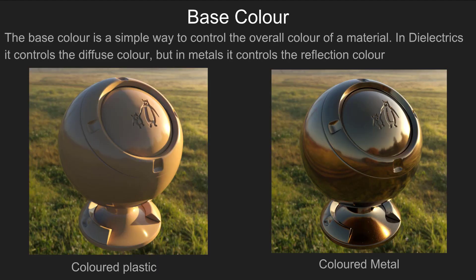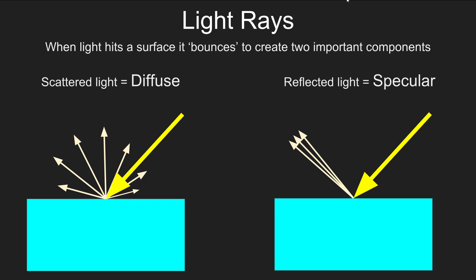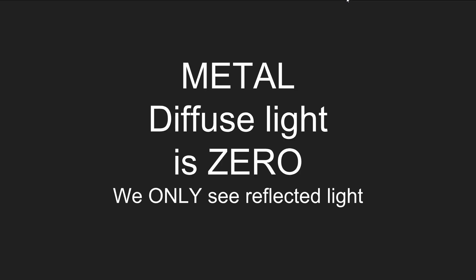Base color is quite simply a way to control the overall color of the material. In dielectrics it controls the diffuse color, but in metals it controls the reflection color. When light hits the surface it bounces to create two important components: scattered light, which we call diffuse, and reflected light, which we call specular. In metals there's no diffuse light — we only see the reflected light, the diffuse light is zero. And that's the key difference between a metal and a dielectric. Essentially, a dielectric is anything that's not a metal.